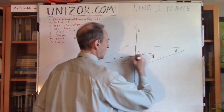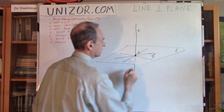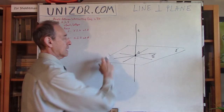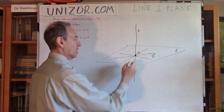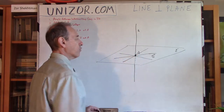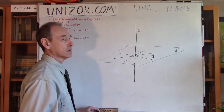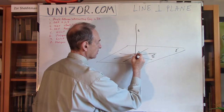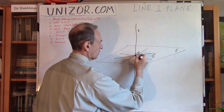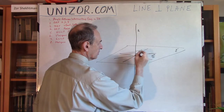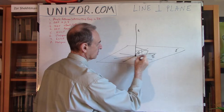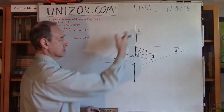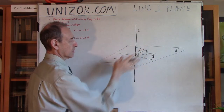So this line, this line, this line — no matter which line we draw in plane gamma passing through this point, this line would be perpendicular. All these angles are 90 degrees. They're just rotating.